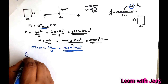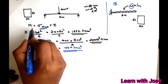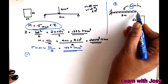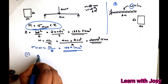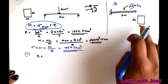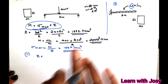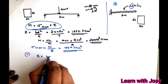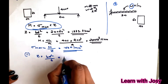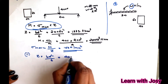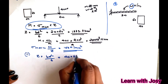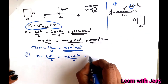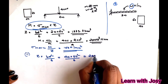Now for the second case, we substitute into the cantilever beam equation. First, we calculate Z. This is a rectangular section, so Z = bd²/6, where b is 40 mm and depth is 60 mm. Solving: Z = 24,000 mm³.